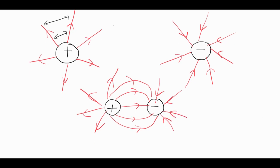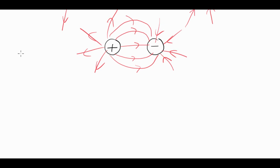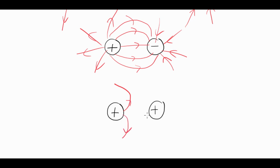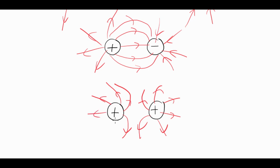If we took two positive charges, then like charges repel. With two positive charges the electric field lines would look like this — all the field lines are moving out from the positive charges, and these charges will repel.